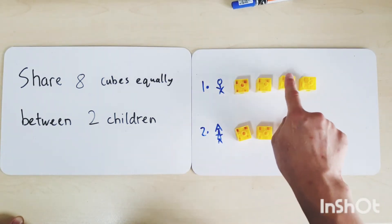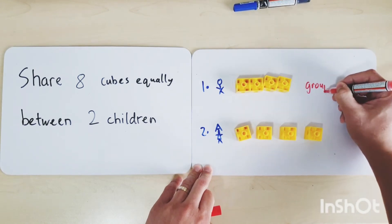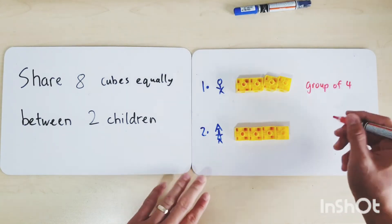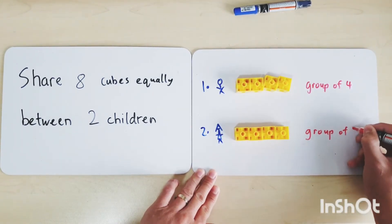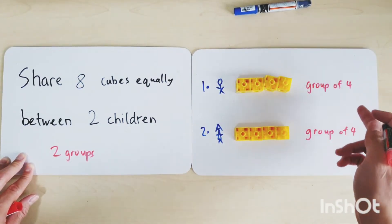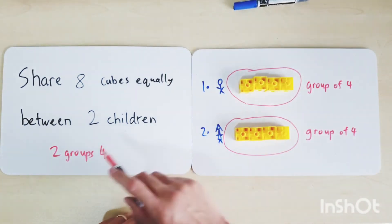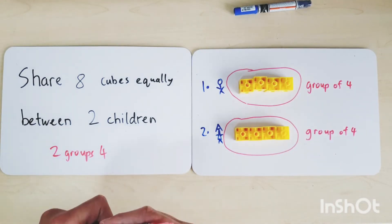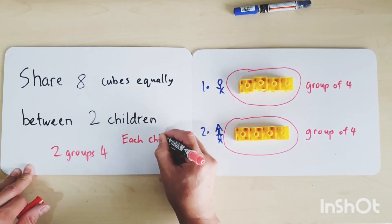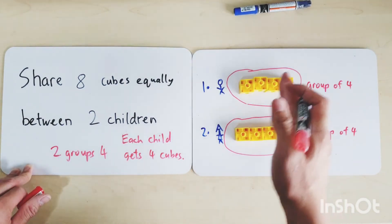The first child has 1, 2, 3, 4 - a group of four cubes. This child is the first group. The second child also has 1, 2, 3, 4 - another group of four. So there are two groups of four. If we share eight cubes equally between two children, each child gets four cubes.